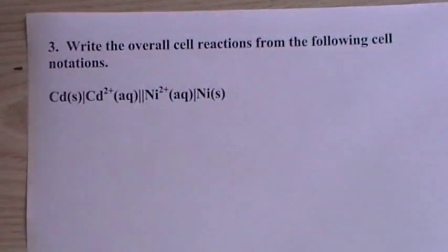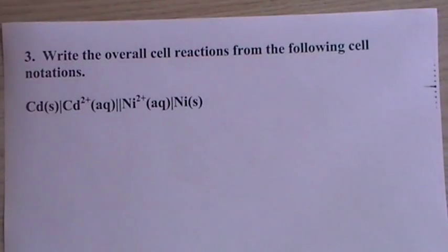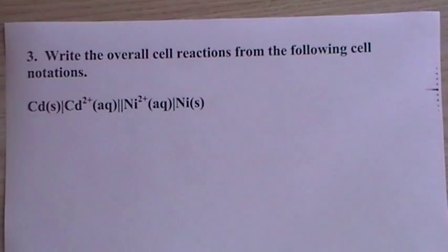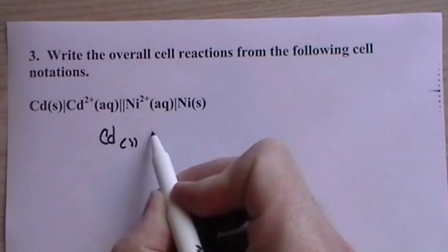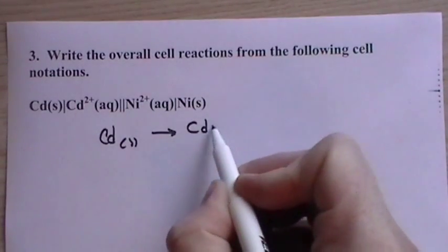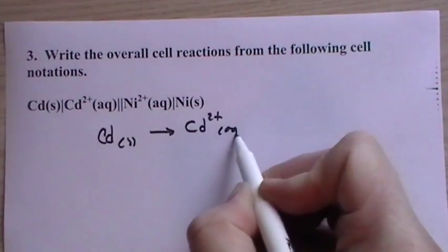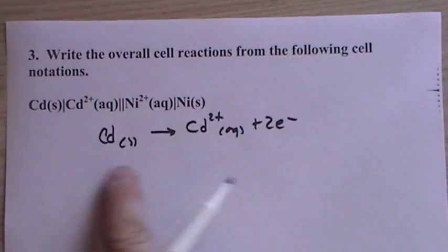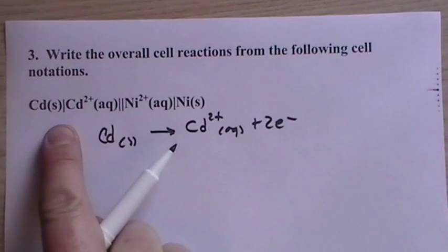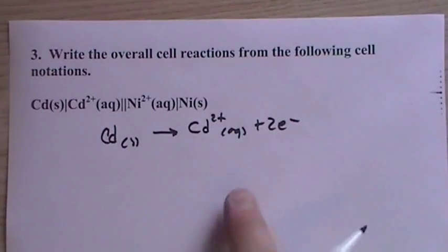Then, now we go backwards. We have, write the overall cell reactions from the following notations. Okay. So this is our oxidation. So just write it out and then we'll worry about balancing later. Now, I'm just going to write a single arrow, even though here it could go forward, back or forwards.